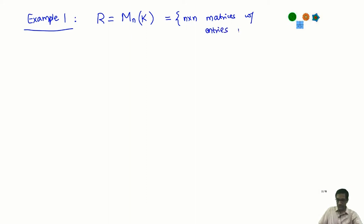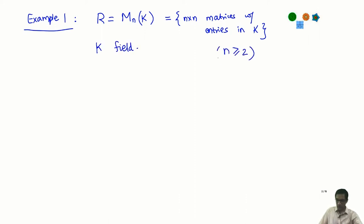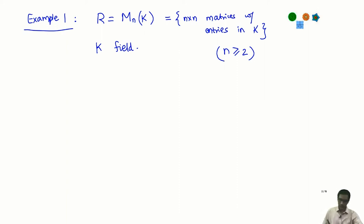Here K is a field. If n is greater than or equal to 2, this is not a commutative ring. If n is 1, this is just the field K itself, where modules over K are just vector spaces. So I want to look at the same situation for n greater than or equal to 2 and give some examples of modules.